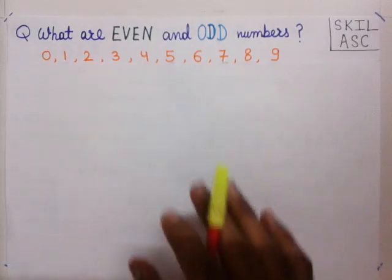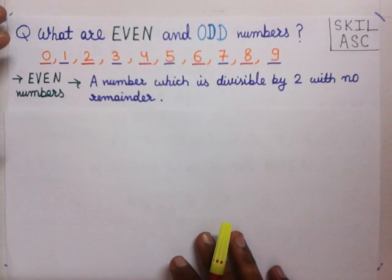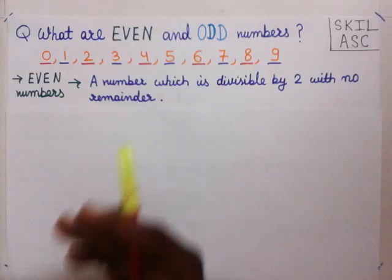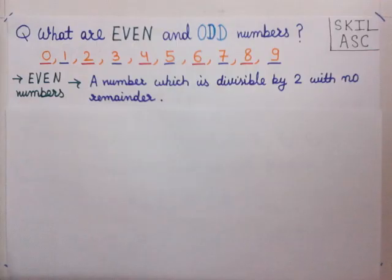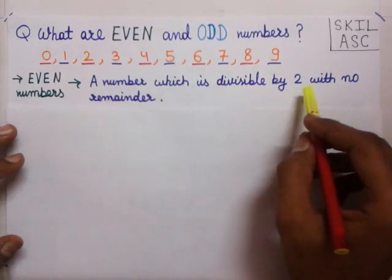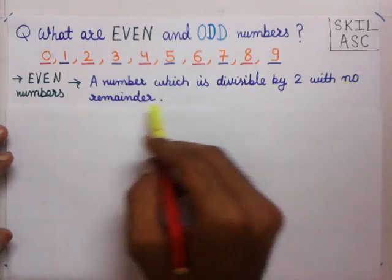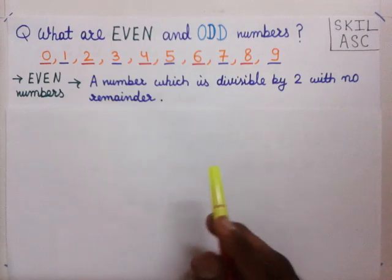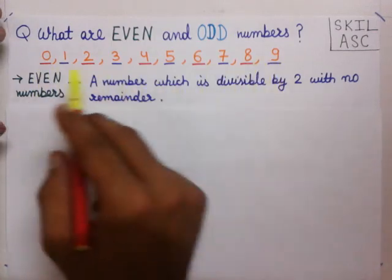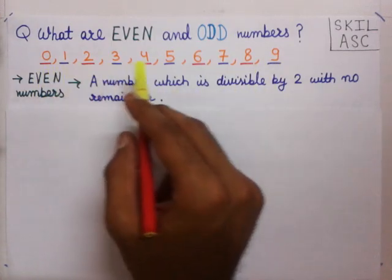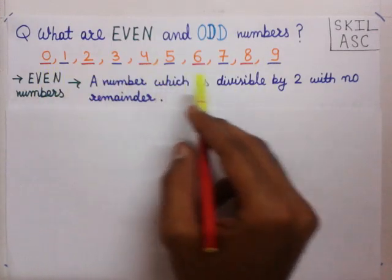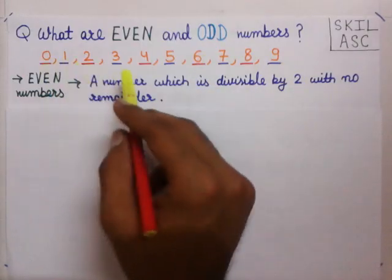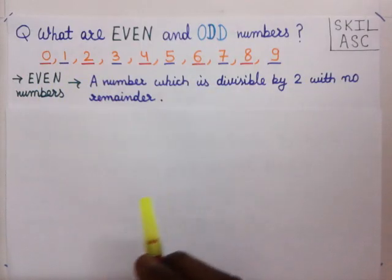Let us first see the definition of even numbers. What is an even number? A number which is divisible by 2 with no remainder is an even number. So from this list, the numbers which are divisible by 2 with no remainder will be even numbers.